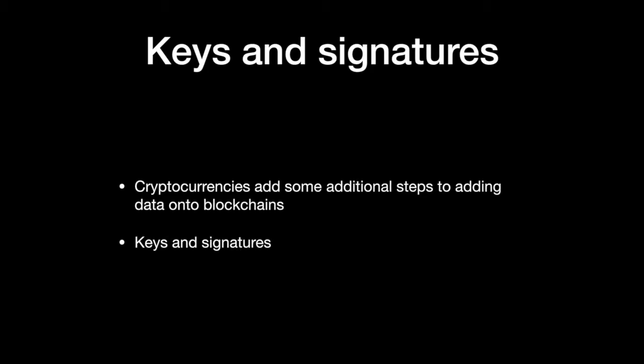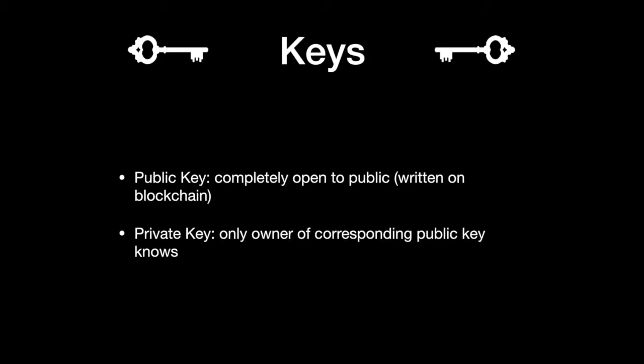This is where keys and signatures come in. Each cryptocurrency account has its own unique private key and public key. Public keys are basically the account's address on the blockchain — they can be thought of as the username of the account. Transactions relating to this account explicitly mention this key. Private keys are only known to the owner of the corresponding public key — it's like the password to the public key.